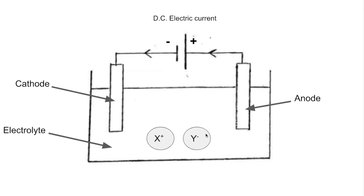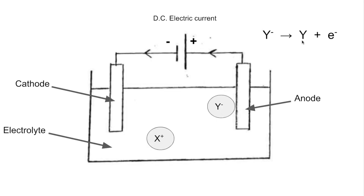We start by looking at what happens at the anode. This negative ion is going to move to the anode and become discharged — it's going to lose its charge. This is called a half equation, and we can see the electrons: the Y minus ion loses its electron and becomes Y without any charge. That's an oxidation process because we've lost an electron — Oxana, oxidation at the anode. The electron released goes round the circuit.